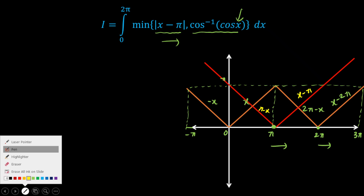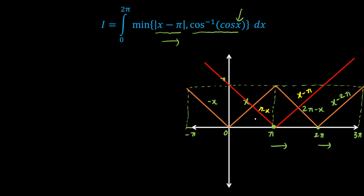Now I am going to define the minimum of both functions by superimposing the graphs over [0, 2π]. As I move from 0, the minimum will be cos⁻¹(cos x), which equals x. After a certain point the branch changes. When the two functions x and π - x are equal, x equals π/2. So this crossover point is π/2.